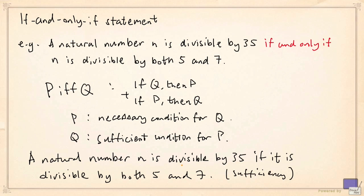And for necessity, we have to prove that if n is divisible by 35, then n is divisible by both 5 and 7.